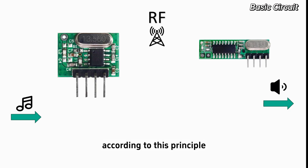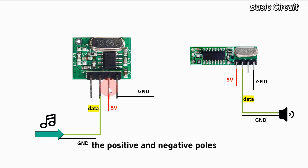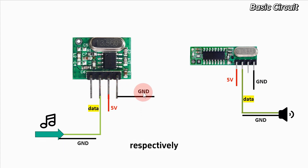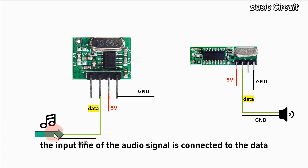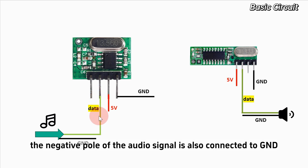According to this principle, we draw the circuit diagram. At the transmitting end, the positive and negative poles of the transmitting module are connected to 5V and GND respectively. The input line of the audio signal is connected to the data pin of the transmitting module, and the negative pole of the audio signal is also connected to GND.